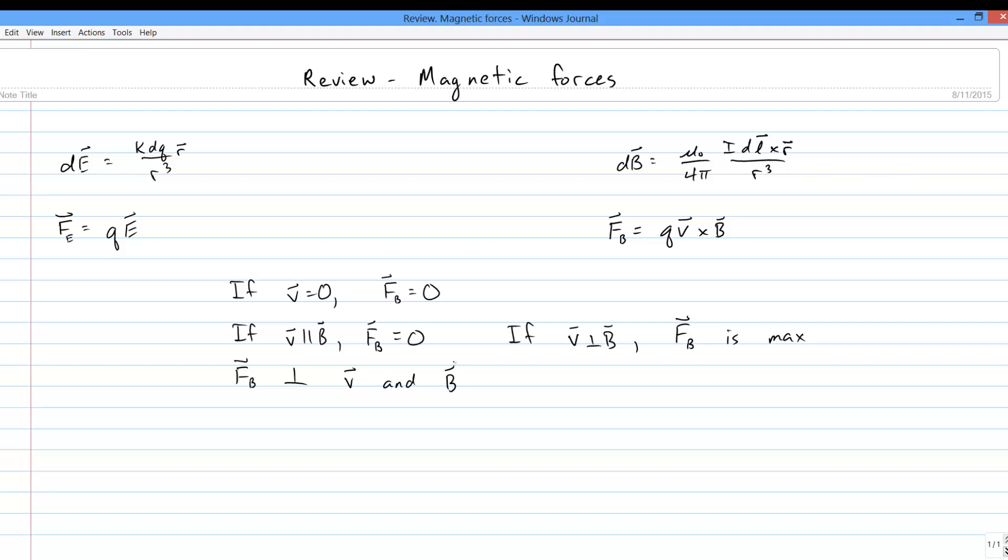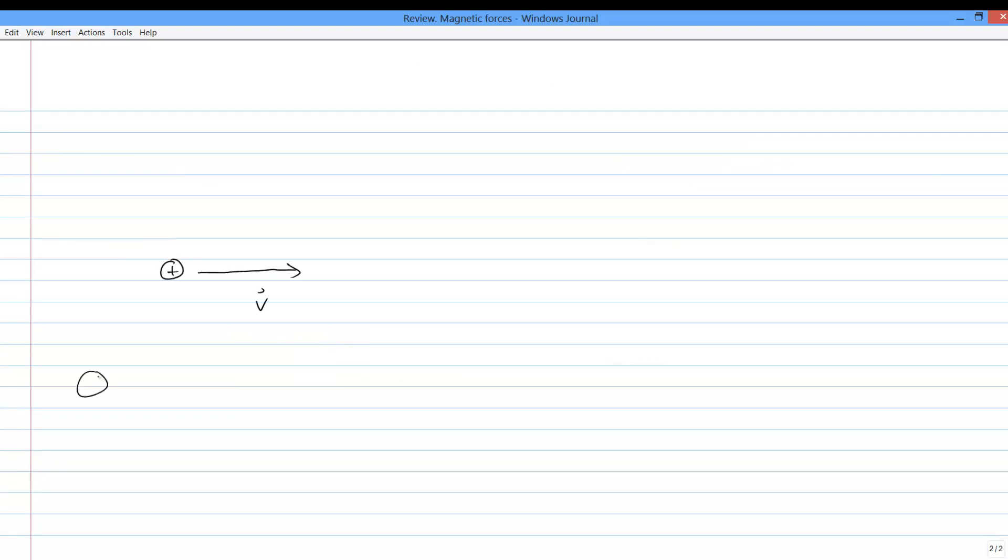Let's take a quick look at the motion of a point charge in a magnetic field. Suppose I have a positive point charge moving to the right through some magnetic field oriented into the page. Doing a bit of right-hand rule shows me that the force on the positive charge is upwards.